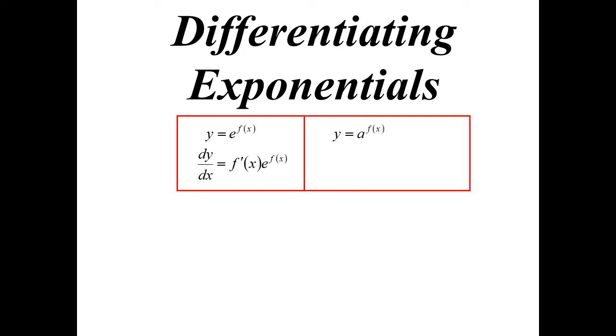If it's some other base, it's pretty much the same. So if it's a to the power of f(x), the only difference is we also multiply by the logarithm of a, and that's the natural logarithm of a, so base e.